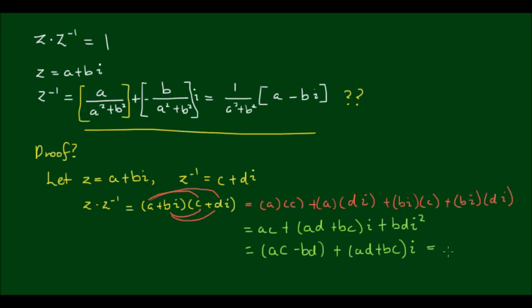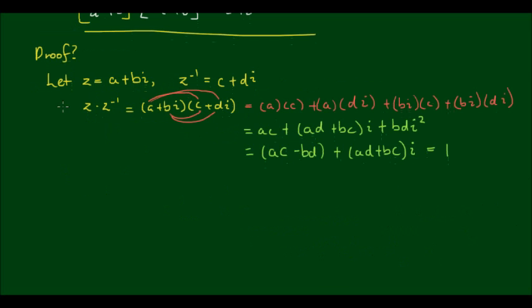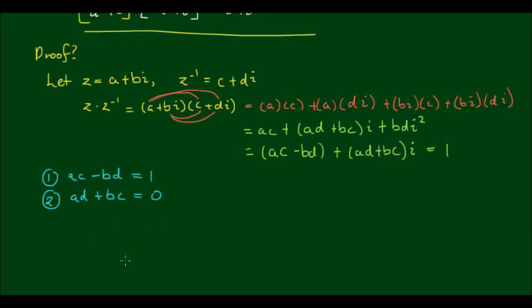And this result we know is equal to 1. So what this means is we can set up a system of two equations where ac minus bd, which is the real component, is equal to 1. And the imaginary component ad plus bc is equal to 0. And we want to solve this system of simultaneous equations to get c and d in terms of a and b.